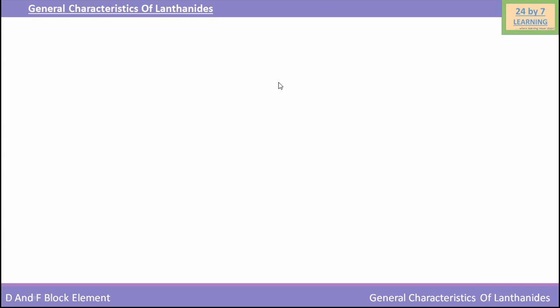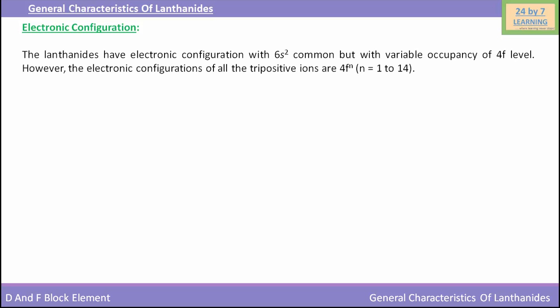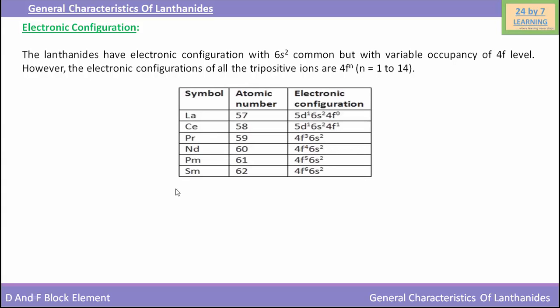Here are the general characteristics of lanthanides. First, we will see the electronic configuration of lanthanides. The lanthanides have electronic configuration with 6s² common, but with variable occupancy of the 4f level. However, the electronic configurations of all the tri-positive ions are 4f^n, where n is equal to 1 to 14. In this table, the atomic number and electronic configurations of lanthanides are given.